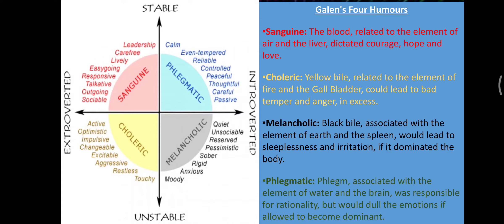The four humors are: sanguine, phlegmatic, melancholic, and choleric. According to Hippocrates, the four substances are yellow bile, black bile, phlegm, and blood. Galen later further explained and elaborated on these. They believed that when one of these is out of balance, it could affect both physical and mental well-being, so all four should be kept balanced.